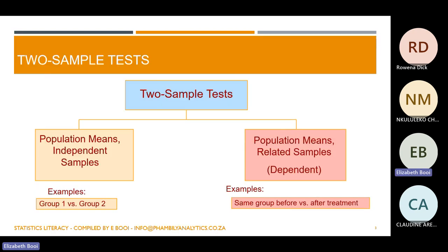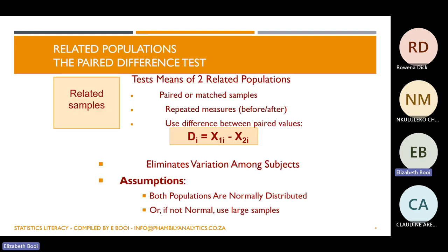Just to recap — we know that we can do two samples, but one can be independent. We looked at the independent case: if you have two groups like male and female, or primary and high school, those are independent. Today, we're going to be looking at related samples where it is from the same population, but we're looking at the group before and the group after the treatment.